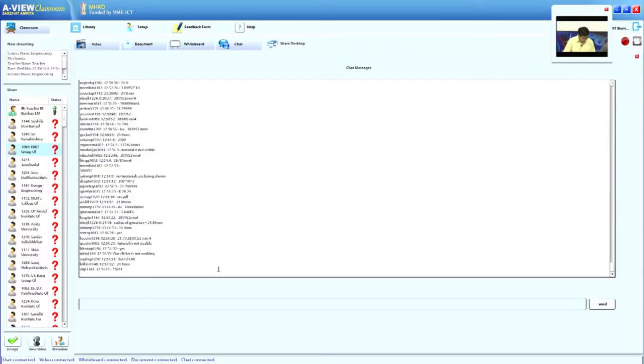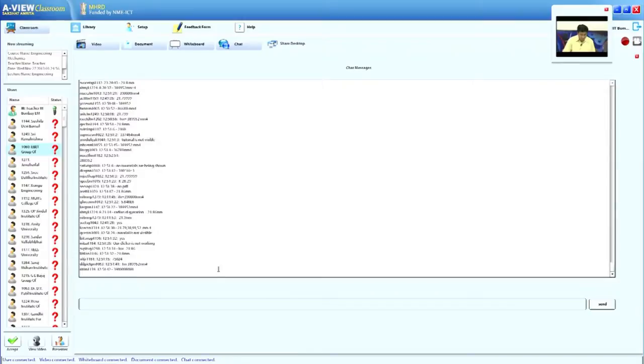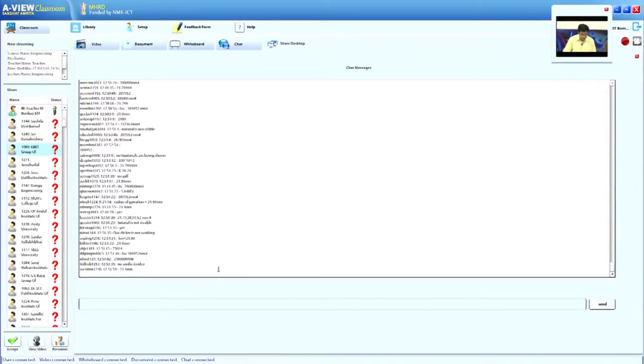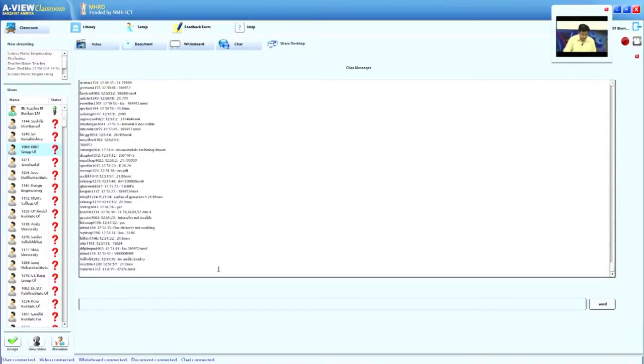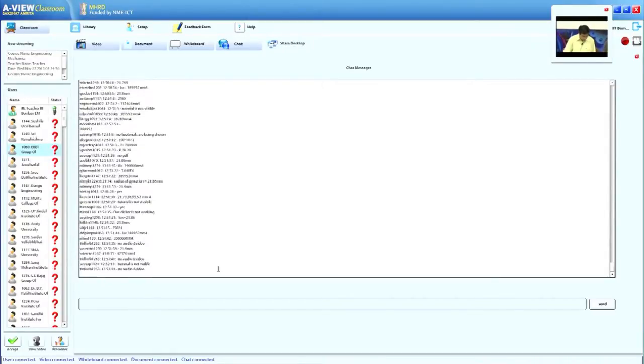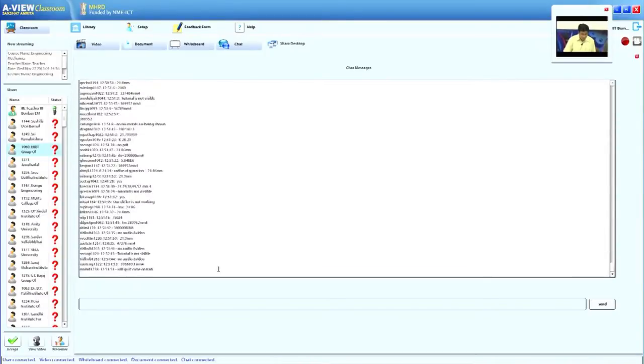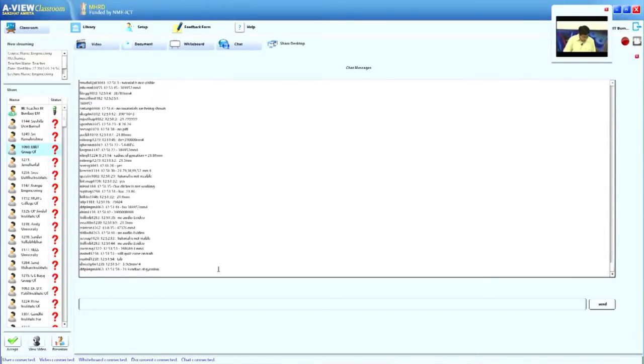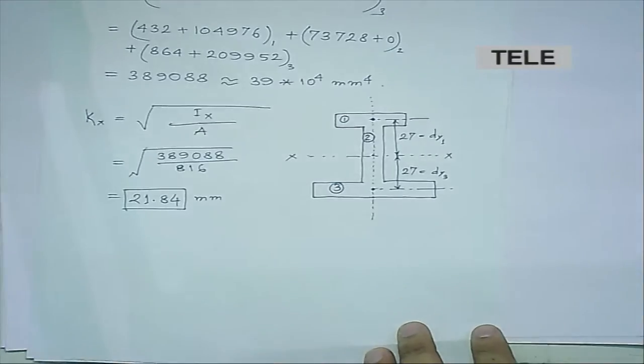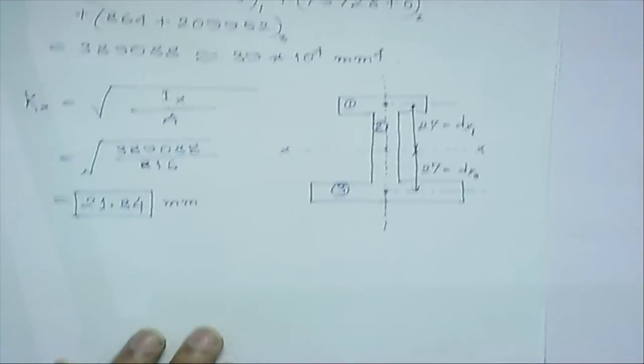Many students are giving the correct answer. The moment of inertia Ix is of the order of 39 × 10⁴ mm⁴, and the radius of gyration is 21.8 mm. You can look at the tutorial solution carefully.